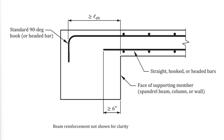The top and bottom flexural reinforcement of two-way slabs should be properly terminated at the ends. The bottom reinforcement must extend at least 6 inches into the supporting member, and the top reinforcement must achieve the required development length. To determine the required development lengths, refer to the video about design of reinforced concrete beams — the link is provided in the description.